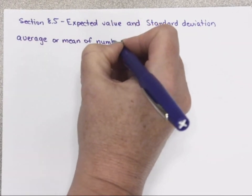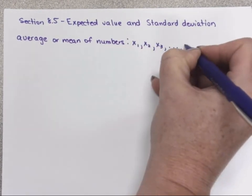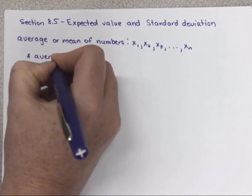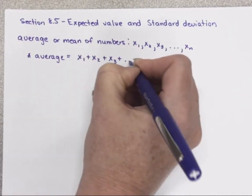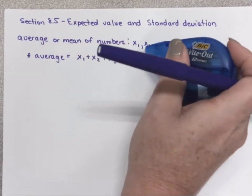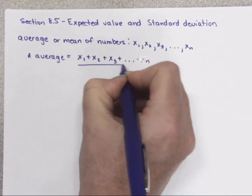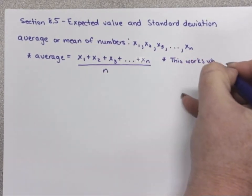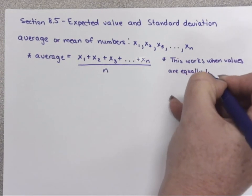Let's say I wanted you to find the average or the mean of the numbers x₁, x₂, x₃, and so on. The average formula involves adding all those values together — I'm using dot-dot-dot because I'm not telling you how many values there are. You add up all the values and divide by however many you have. But this only works when the values are equally likely or equally weighted.